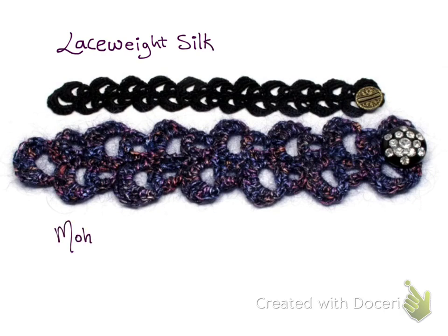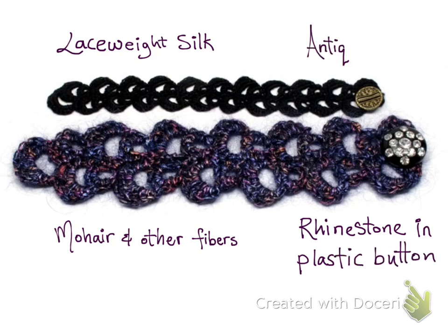So here are two bracelets that I made. The top is made with a lace weight silk and the bottom one is made with mohair and other fibers. And I added some buttons here. Here's some information about the kinds and sizes of buttons I used.